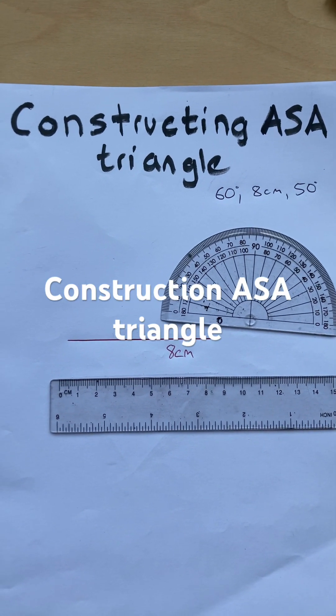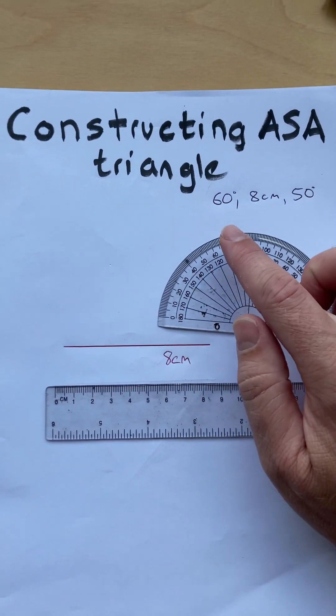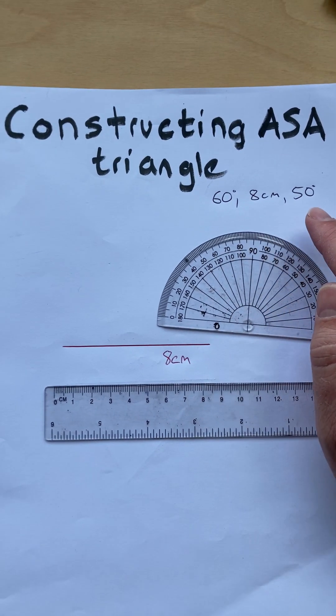Hello and welcome to Martin Maths. We're doing construction of an angle-side-angle triangle. In this case, we're going to do 60 degrees, 8 centimeters, and 50 degrees.